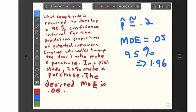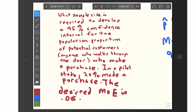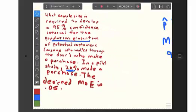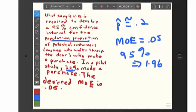Okay, so, here is another problem. What sample size is required to develop a 95% confidence interval? This time, it's for the population proportion. So, we're going to estimate P. And, in a pilot study, we had 20% make a purchase. So, that's going to be P hat is 0.2. And, the desired margin of error is 0.05.